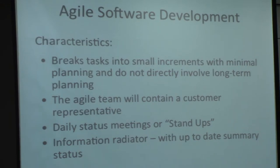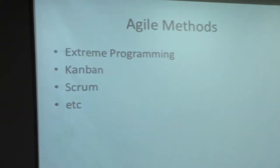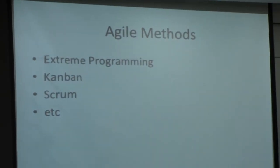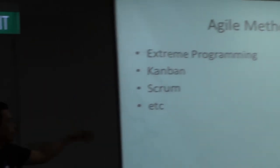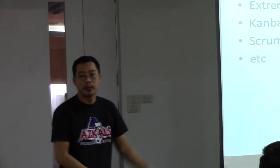An information radiator — a big board with sticky notes showing up-to-date summary status. There are different Agile methods: Extreme Programming, Kanban, Scrum, Scrum-Kanban hybrids. What I'll discuss is Scrum, which is one of the most widely used and adopted by a lot of dev companies.